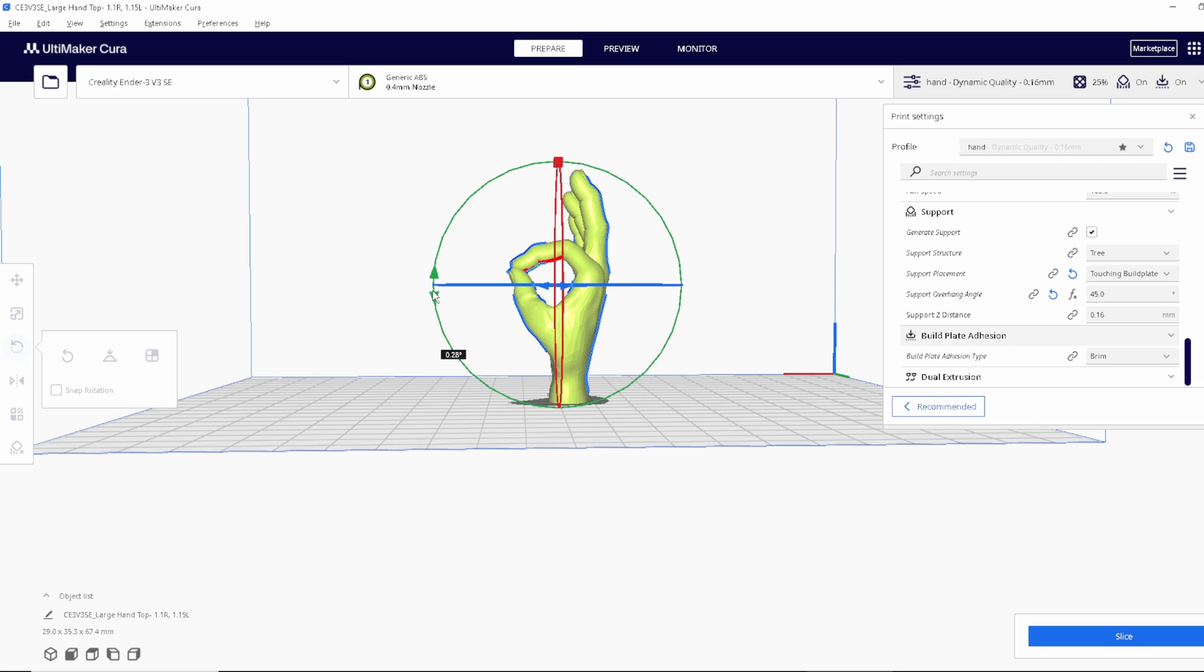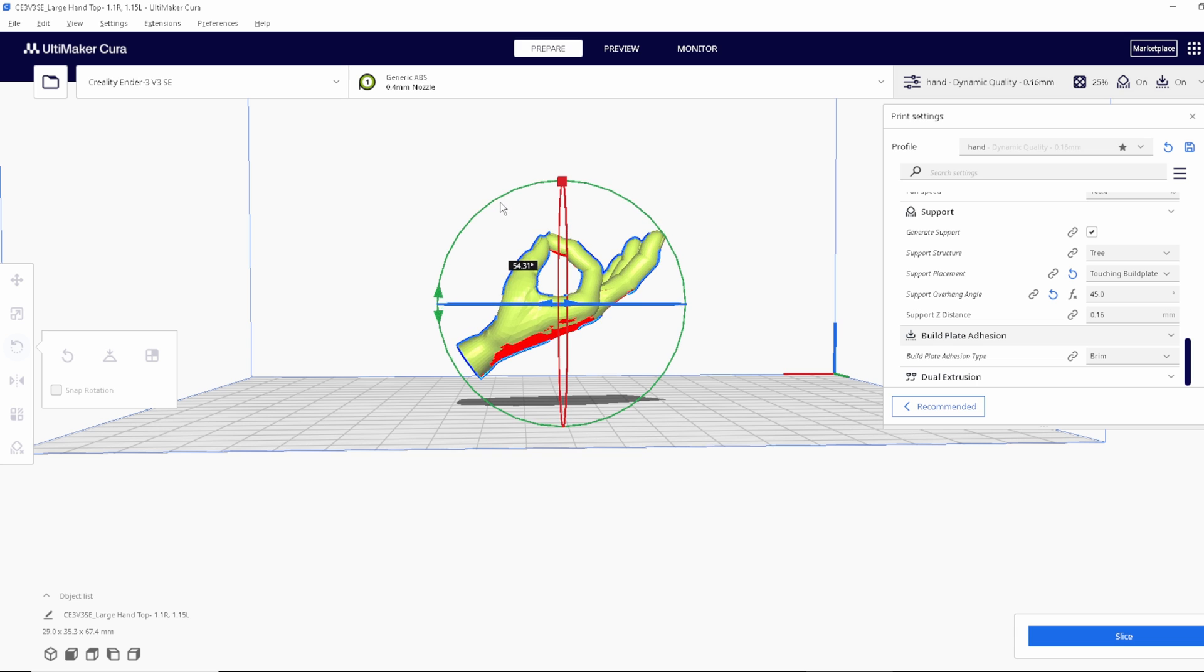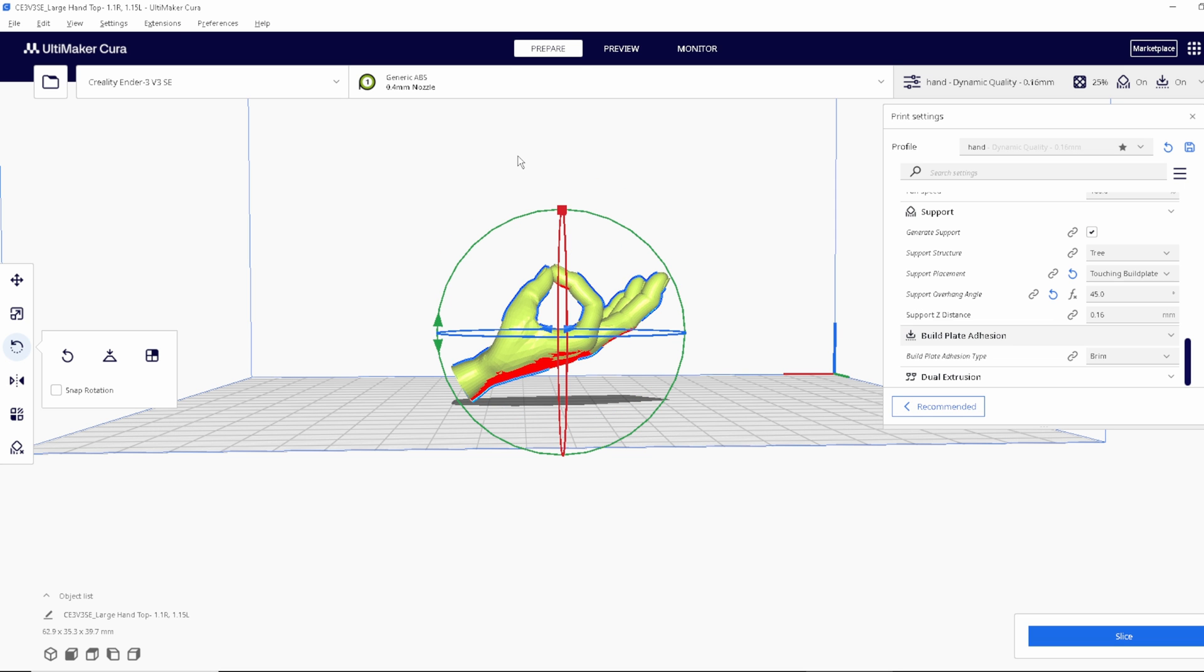Depending on your printer and how well you calibrated it, you may be able to push this angle even further to 50 or even 60 degrees. The bigger the angle, the stronger your print will be, but the harder it will be to print.